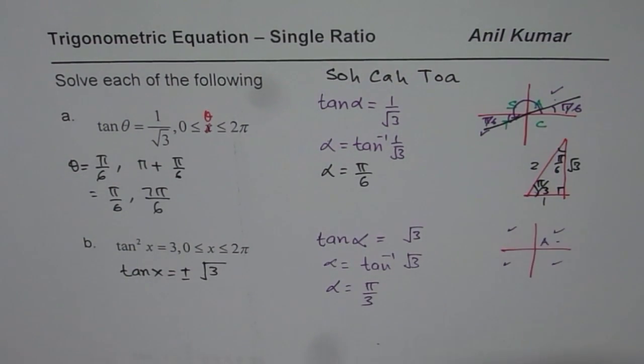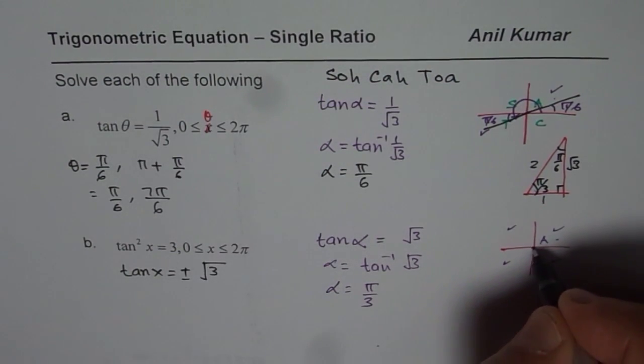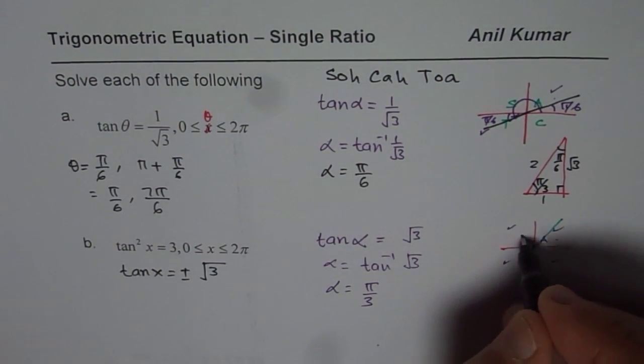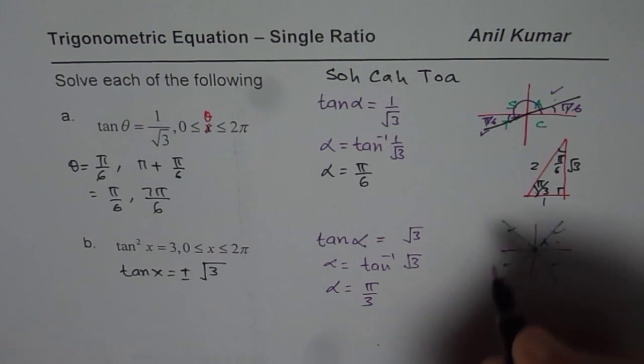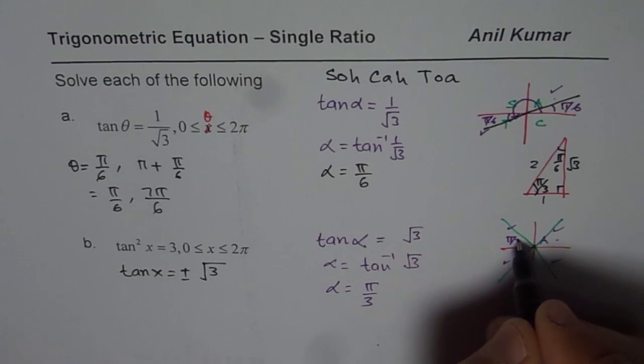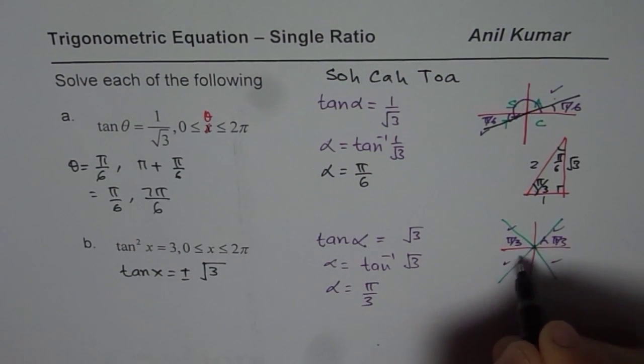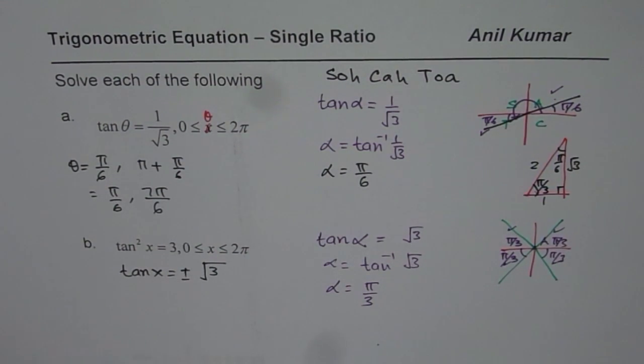Once you get your angle then you can write down all the answers. So we got pi by 3. What I am trying to say here is this acute angle is pi by 3. The angle which the terminal arm makes with horizontal, that is what acute angle is. But what is our solution?